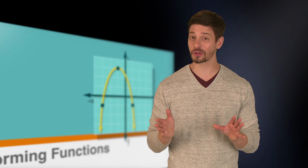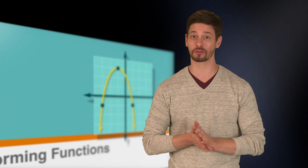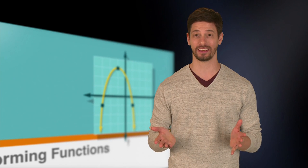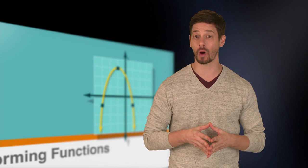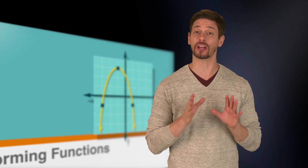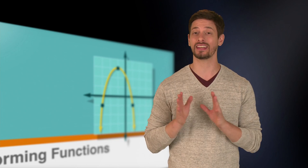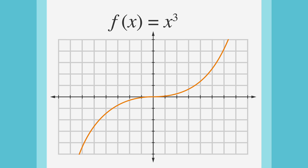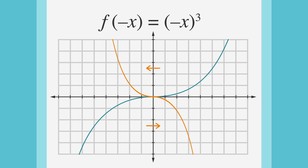The ACT can also ask us to reflect a graph over the x or y axis. How do we reflect functions over the y axis? We replace every x with negative x. In our example, f of x equals x cubed, we can reflect the function over the y axis by replacing x with negative x, so the new reflected function would be negative x quantity cubed. This has the effect of reflecting the function around the y axis.